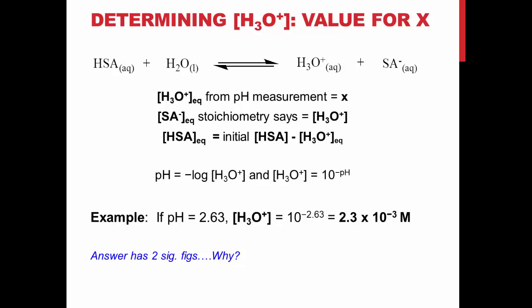Note that the entire portion of the pH value is not significant, only the two decimal places. In the example shown, there are only two sig figs because there are only two decimal places in the pH value.